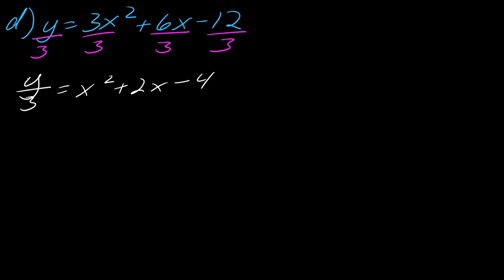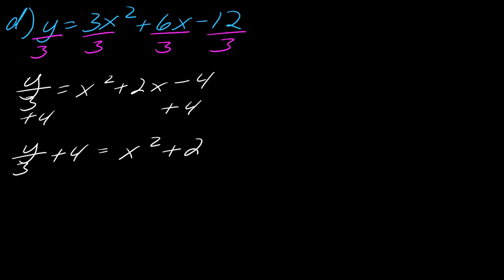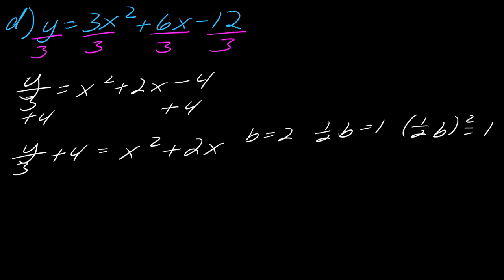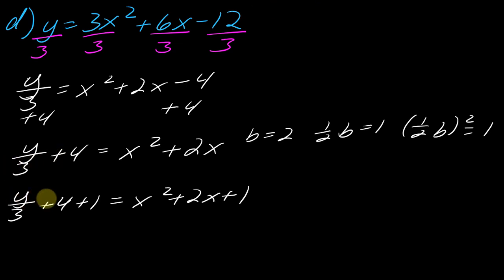Now I need to isolate my x's, so I'll add four to each side: y over three plus four equals x squared plus 2x. Now I can complete the square. My b is two, therefore my half-b is one, therefore my half-b squared is one. So I add one to each side: y over three plus four plus one equals x squared plus 2x plus one. Collecting like terms: y over three plus five equals x plus one squared.